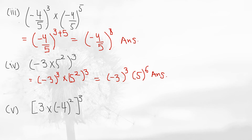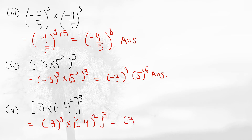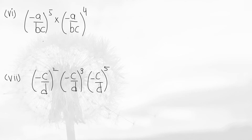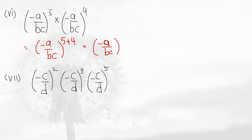Question 6 applies the law of product of powers. The base is the same (-a/bc), so we write the base once and add the powers: 5 plus 4 equals 9. So the answer is (-a/bc) to the power 9. The next question similarly uses the same law with base (-c/d): we add the powers 2 plus 3 plus 5, which equals 10. So the answer is (-c/d) to the power 10.